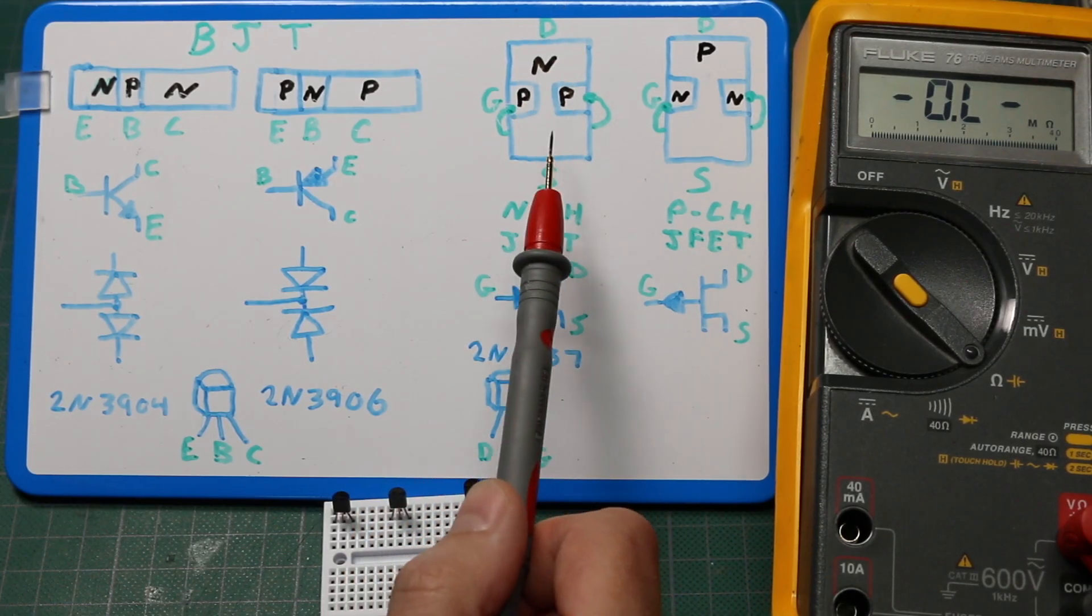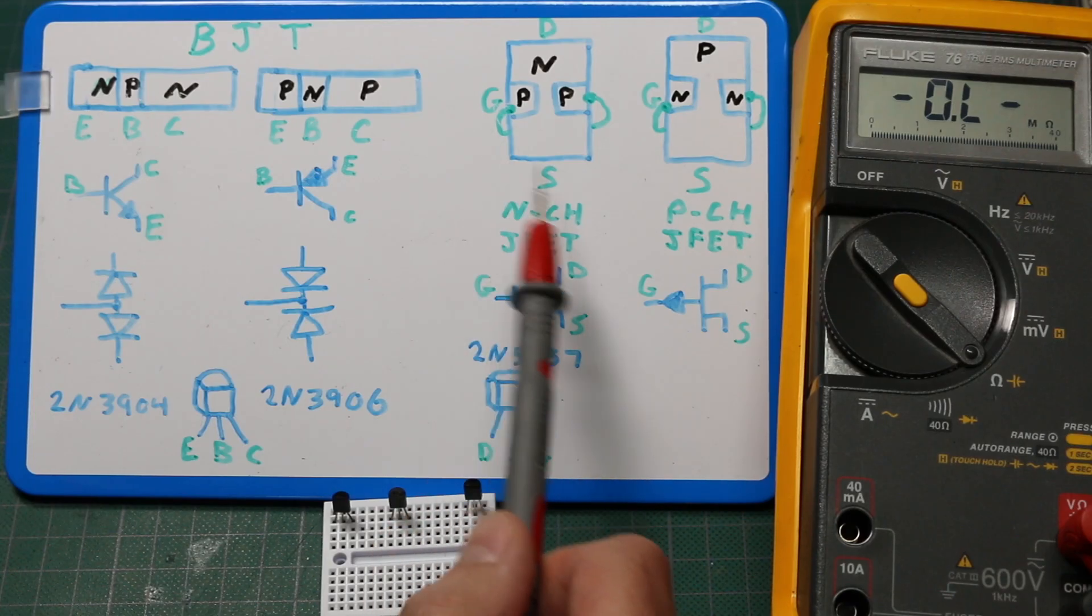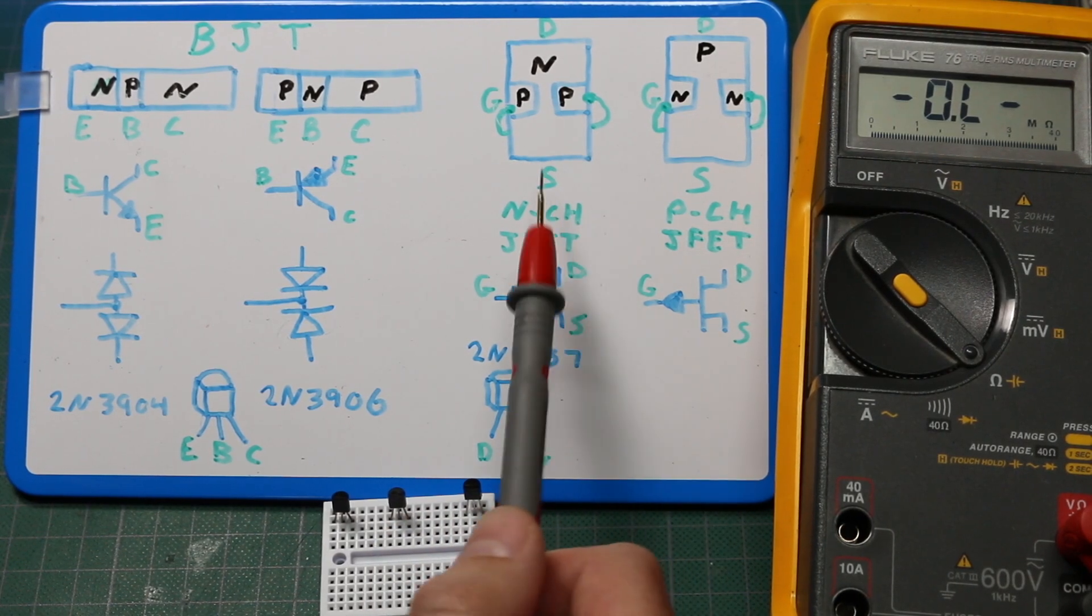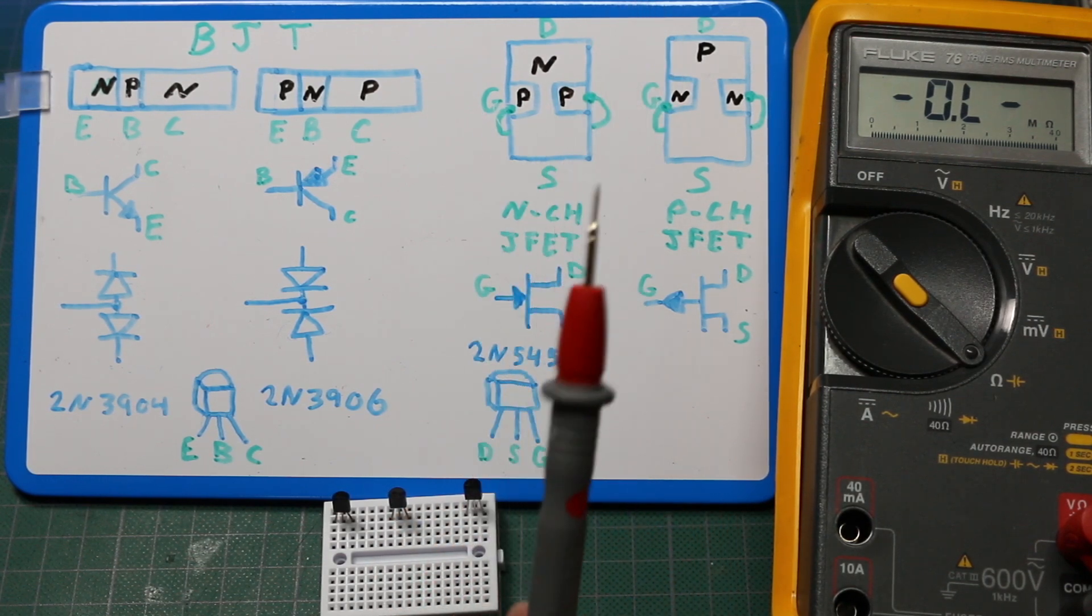And the way the FET works, the channel is open when the voltage from gate to source is zero volts. And we can do this just by shorting gate to source while we are probing the resistance.